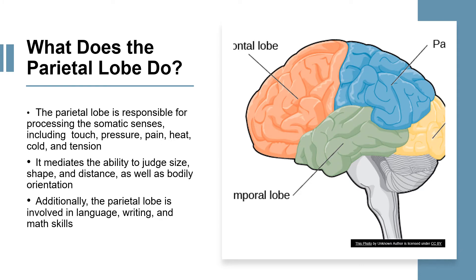The parietal lobe is responsible for processing the somatic senses, including touch, pressure, pain, heat, cold, and tension. The parietal lobe mediates the ability to judge size, shape, and distance, as well as body orientation. The parietal lobe is also involved in language, writing, and math skills.